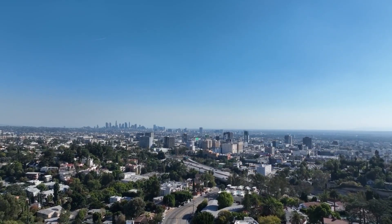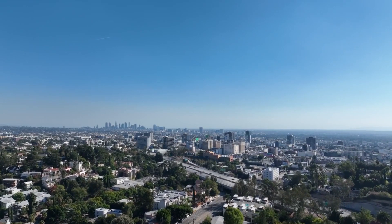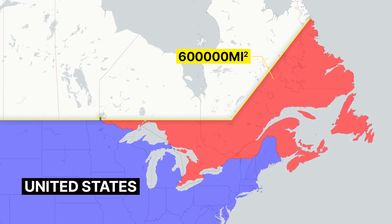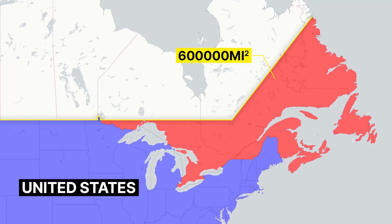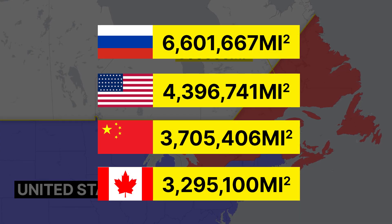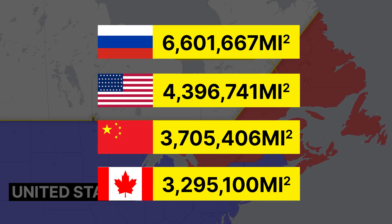But if nothing had changed in history with the determination of this demarcation, this area — more than 600,000 square miles — would belong to the United States. This would have made the United States the second largest country in the world after Russia, surpassing Canada, while Canada would have fallen from second place, reducing its area and dropping to fourth place behind China.